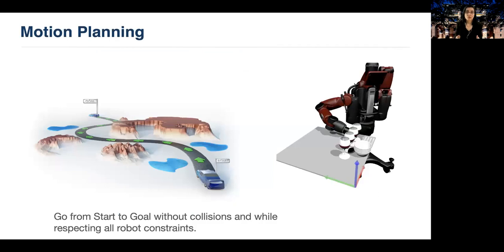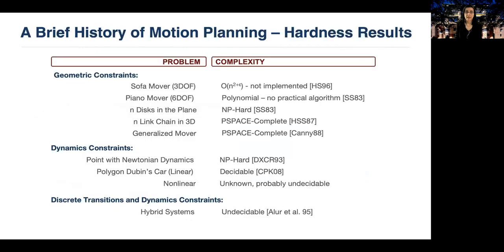The classical version of the motion planning problem considers a known environment, a robot, its properties and constraints, and finds a path to move the robot from a start to a goal configuration while avoiding obstacles and respecting all constraints. It has been shown that the theoretical complexity of this problem is very high. For example, planning for a chain of n-links in 3D is PSPACE-complete. Think about our modern manipulators. They're far more complex than an n-link chain.